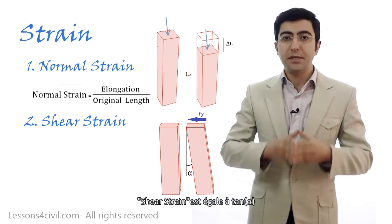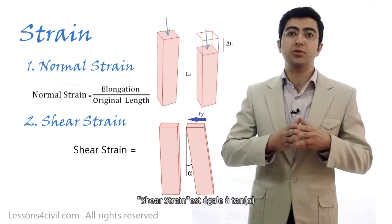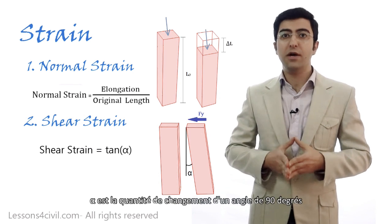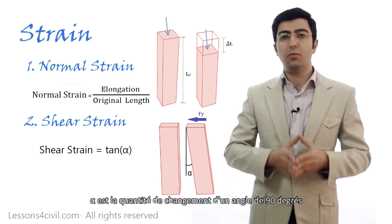As you can see in this picture, shear strain is equal to tangent of alpha, where alpha is the amount of change in a normal angle.